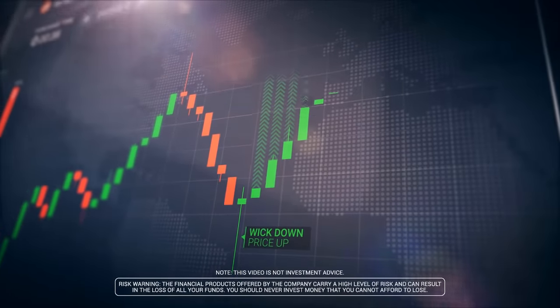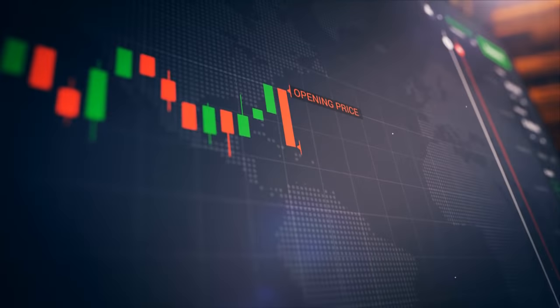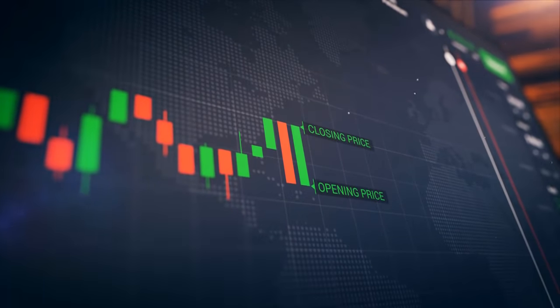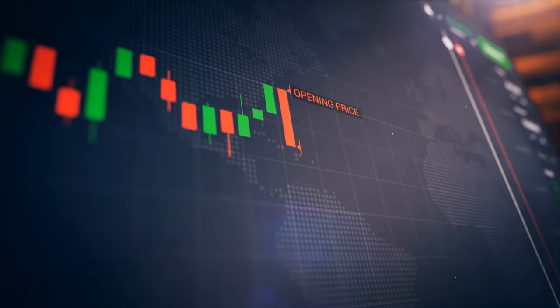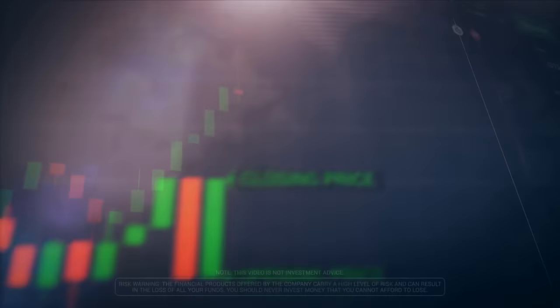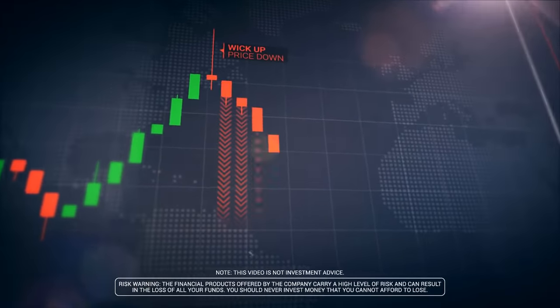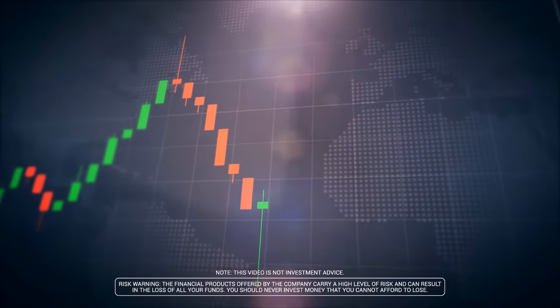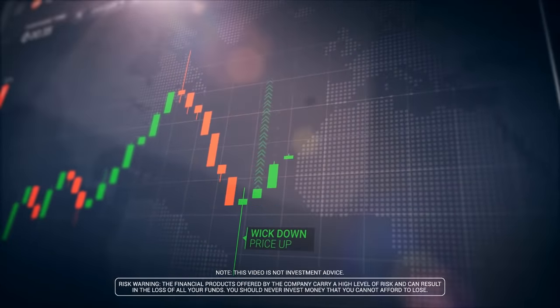It has three basic features. The body, which represents the open to close range. The wick, or shadow, that indicates the intraday high and low. The color, which reveals the direction of market movement. A green or white body indicates a price increase, while a red or black body shows a price decrease.